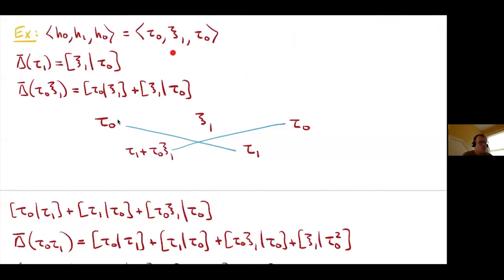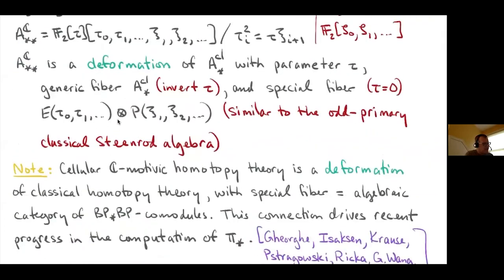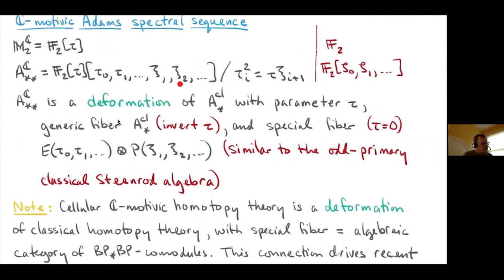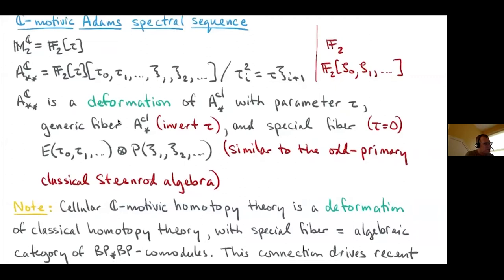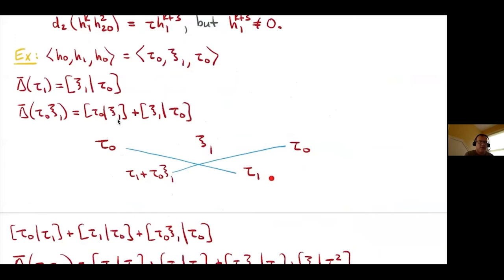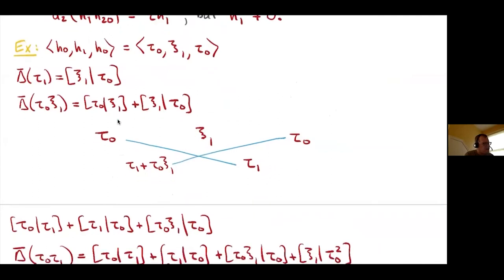Last time we did an extended example with the cobar complex to compute the Massey product <H-naught, H1, H-naught> in the classical situation. You can do the same thing motivically. Classically you had the zetas; motivically you have the taus and xis, where the taus correspond to the zetas and the xis correspond to the zeta squareds. Making that analogy, tau is zeta and xi is zeta squared, the computation is exactly the same.